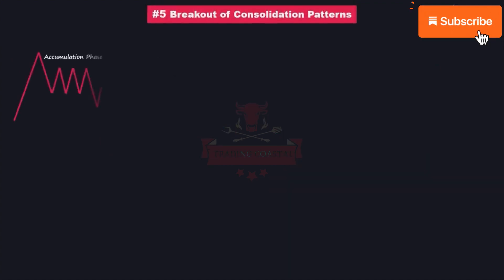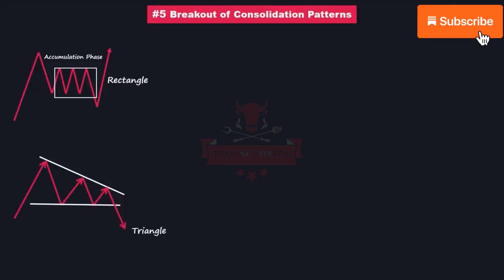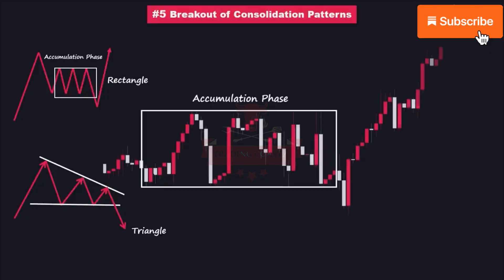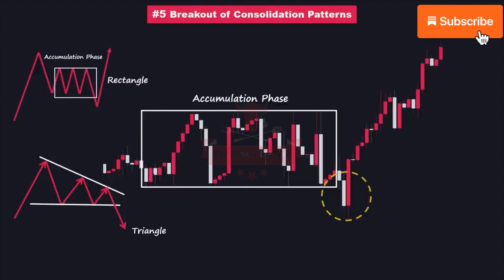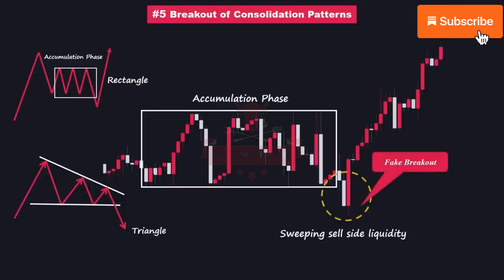Next is the breakout of consolidation patterns. Inducement can occur when a price breaks out of a consolidation pattern, such as a range or triangle. Traders may perceive a breakout as a strong signal, leading them to enter positions. However, market manipulators can reverse the price direction after trapping traders. In this example, we can see that the price was in an accumulation phase, consolidating within a range. However, it was deliberately pushed downwards, creating a false impression that the ranging market phase was coming to an end and the market was about to push to the downside. This induced traders to enter the market with short positions, expecting a bearish continuation. However, the price cleverly used the accumulation phase as an inducement, creating a fake breakout below the consolidation range. By sweeping the liquidity from the sell side, it swiftly reversed direction and experienced strong upward momentum.